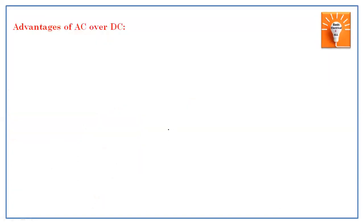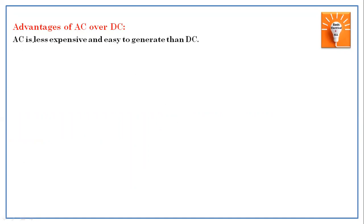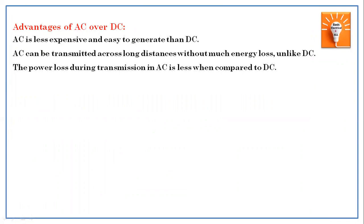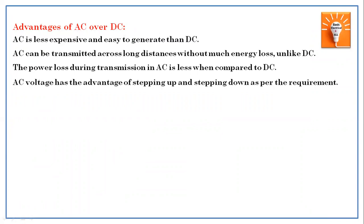AC is less expensive and easier to generate than DC. AC can be transmitted across long distances without much energy loss, unlike DC — the power loss during transmission in AC is less compared to DC. The AC voltage has the advantage of stepping up and stepping down as per the requirement using a transformer. This flexibility exists in AC, but we do not have step-up and step-down facility in the case of DC — that is a major advantage of alternating current.